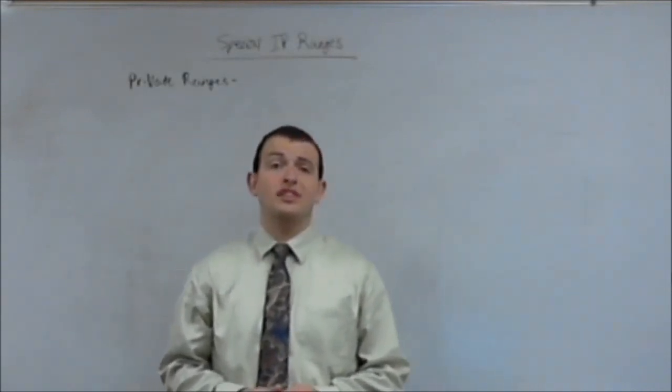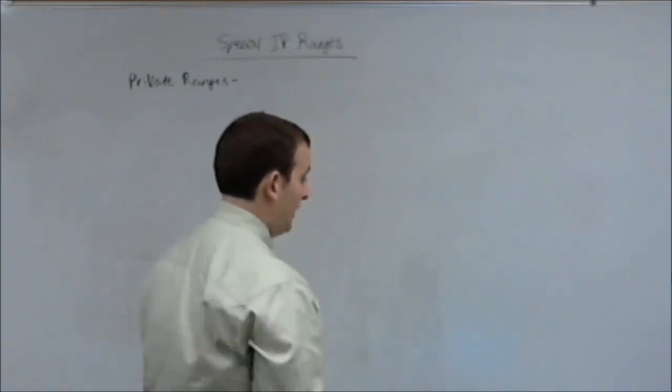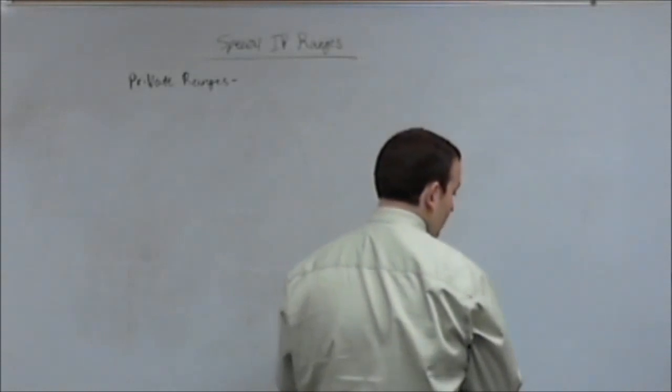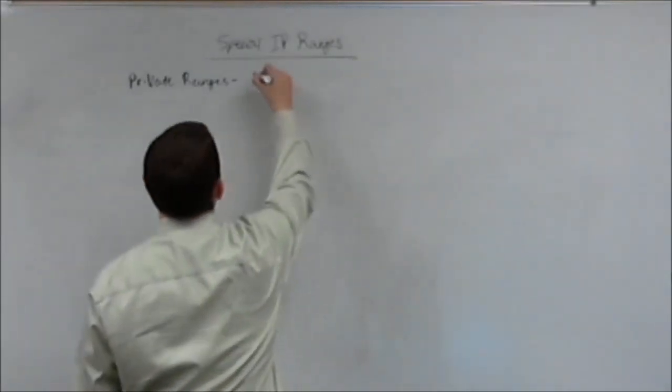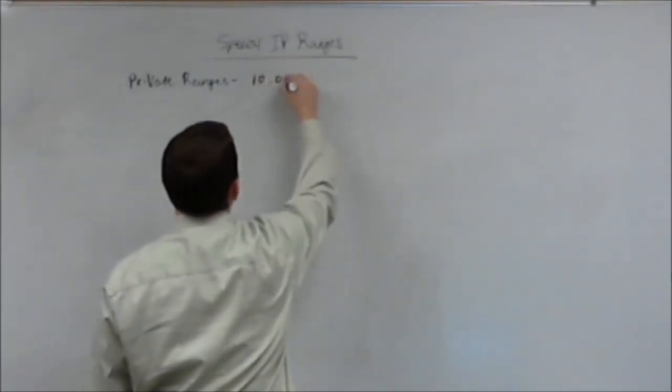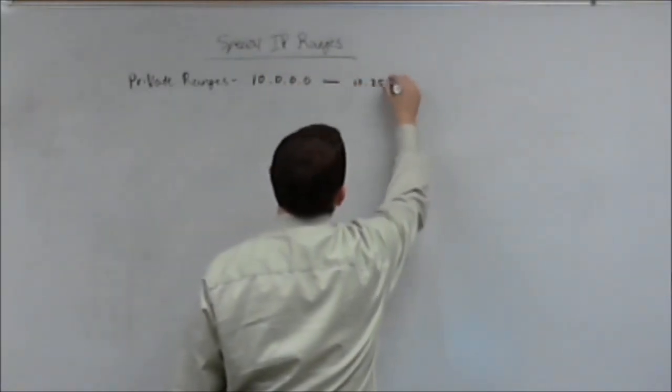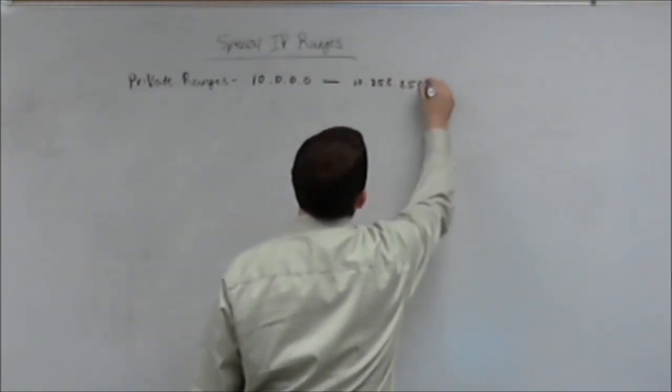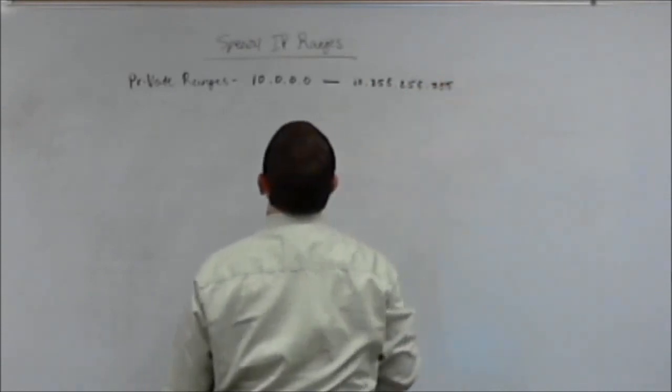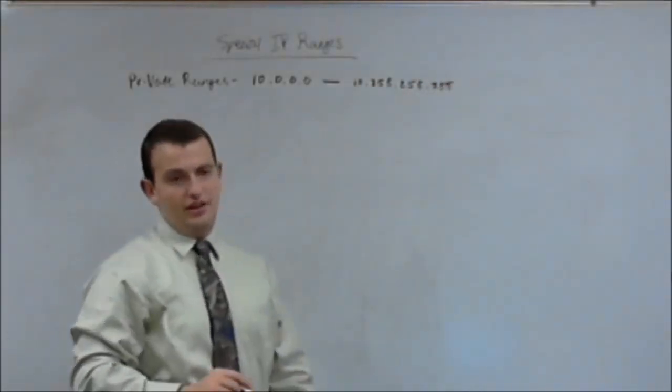They will ask you about these on your CCENT exam. The first range we're going to learn is the 10.0.0.0 all the way to 10.255.255.255 range. This is your first private IP range.